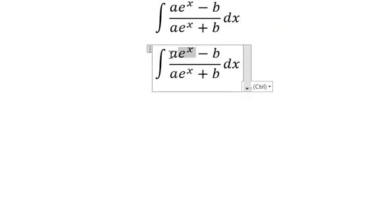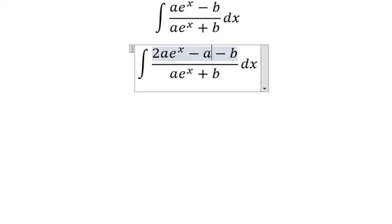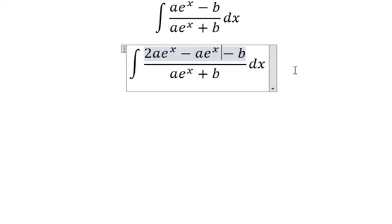For ae^x - b, I can rewrite the numerator as 2ae^x - ae^x - b because I want to factor the expression. This is divided by ae^x + b.